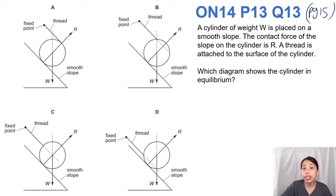A thread is attached to the surface of the cylinder. The thread is gonna exert a tension force T. Just mark it everywhere - T is for tension, not thread. Which diagram shows the cylinder in equilibrium? Equilibrium - this is what we're looking for. Take a close look.